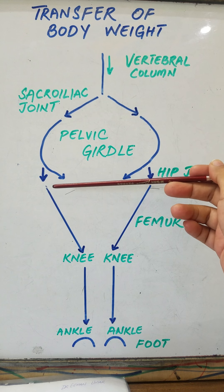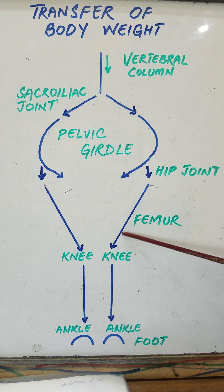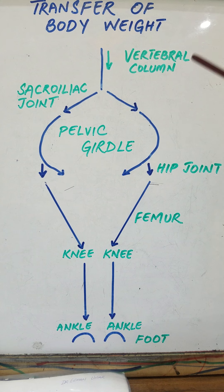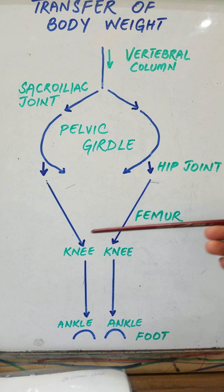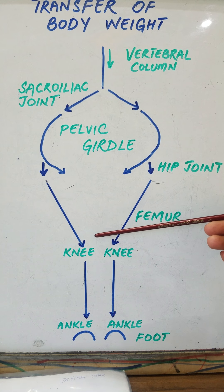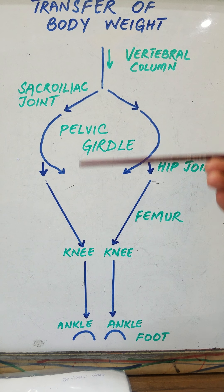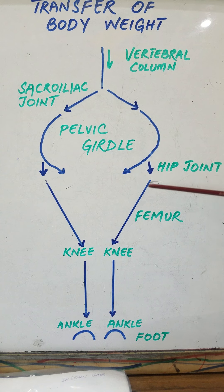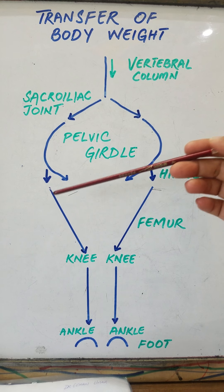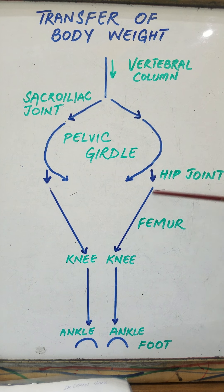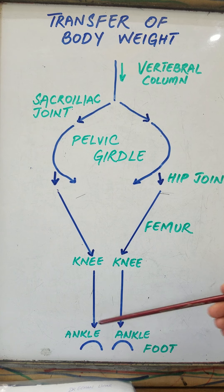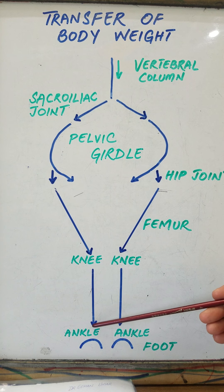From the pelvic girdle, the weight is transferred further downwards through the hip joint to the femur. The femur is placed obliquely, directed inferomedially, so that the knees are placed directly underneath the body. This helps balance the weight. From the knee, the weight is then transferred via the tibia to the ankle joint.